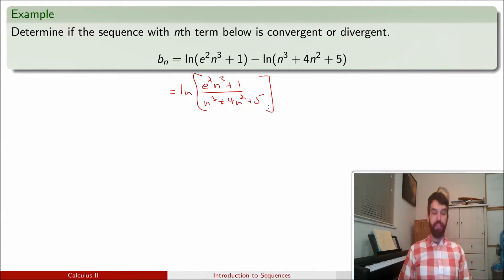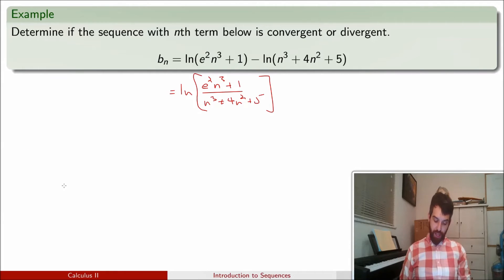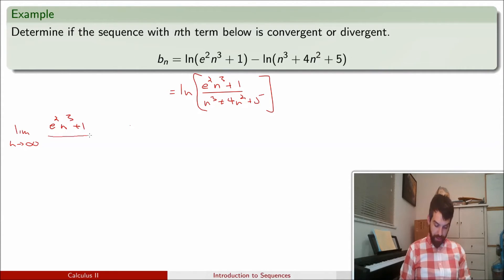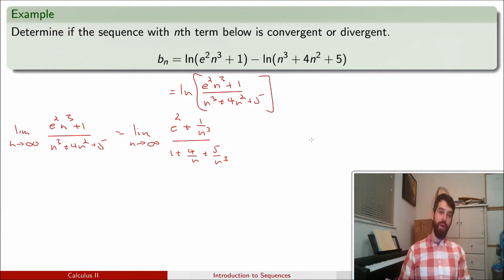For positive n the values are positive, so ln is a continuous function here. I can use the continuous function rule from the previous page. Setting aside the ln for a moment and focusing on the inside: the limit as n goes to infinity of (e² · n³ + 1) divided by (n³ + 4n² + 5). I'll divide top and bottom by n³, giving (e² + 1/n³) divided by (1 + 4/n + 5/n³).